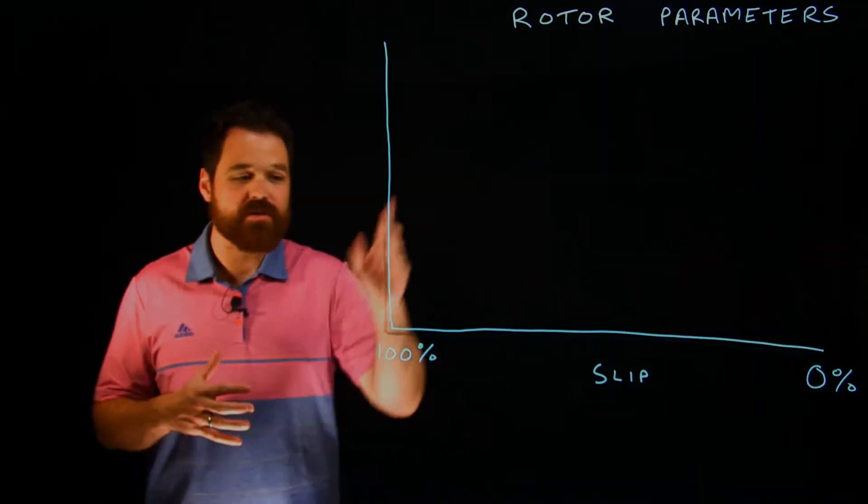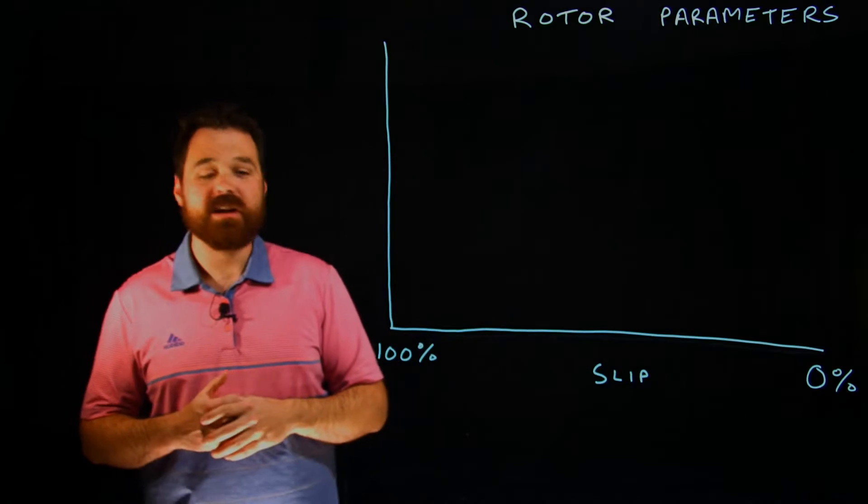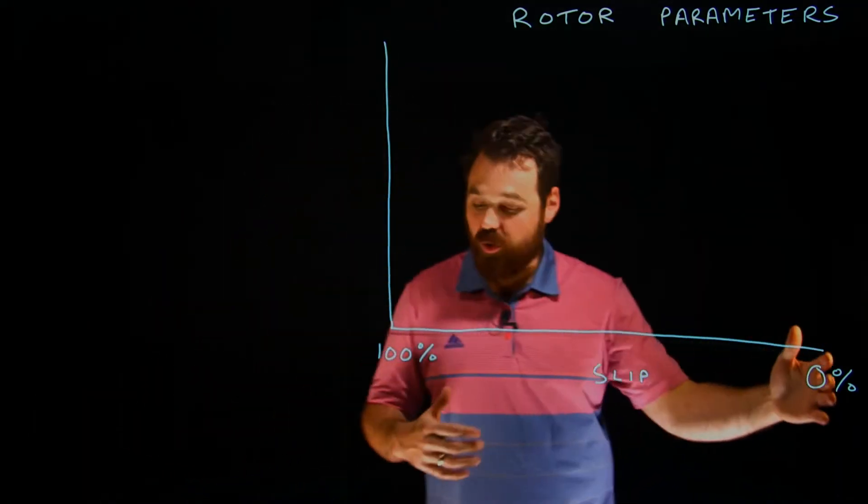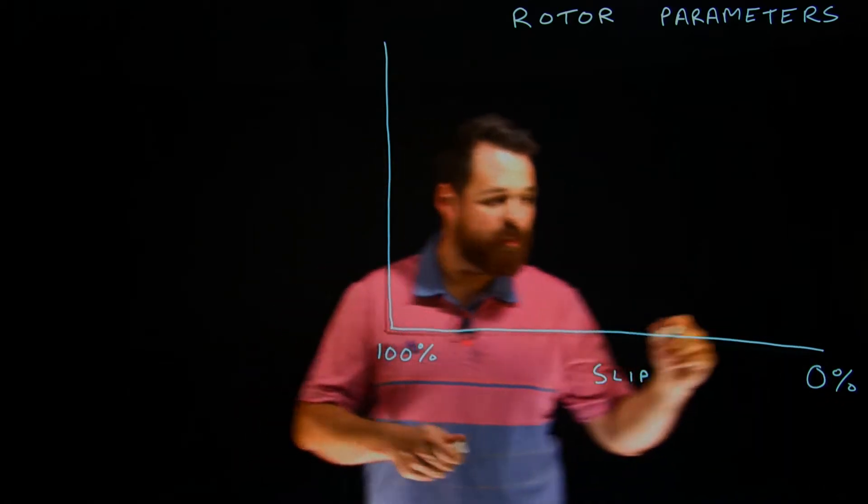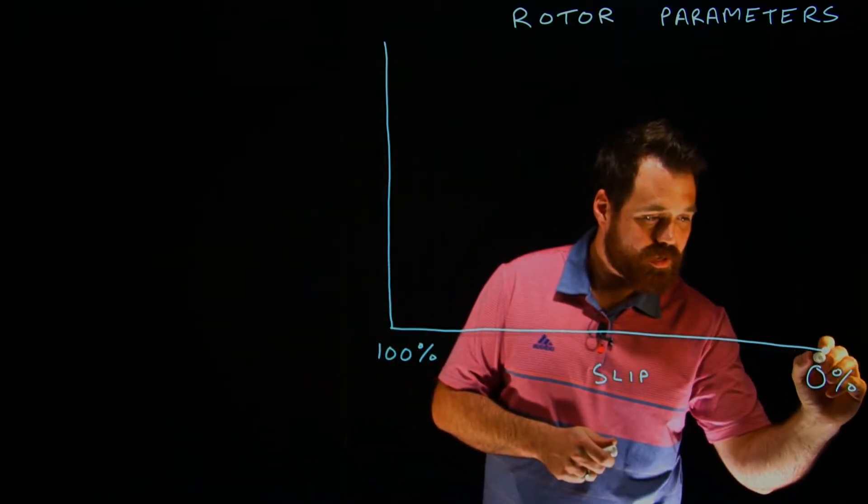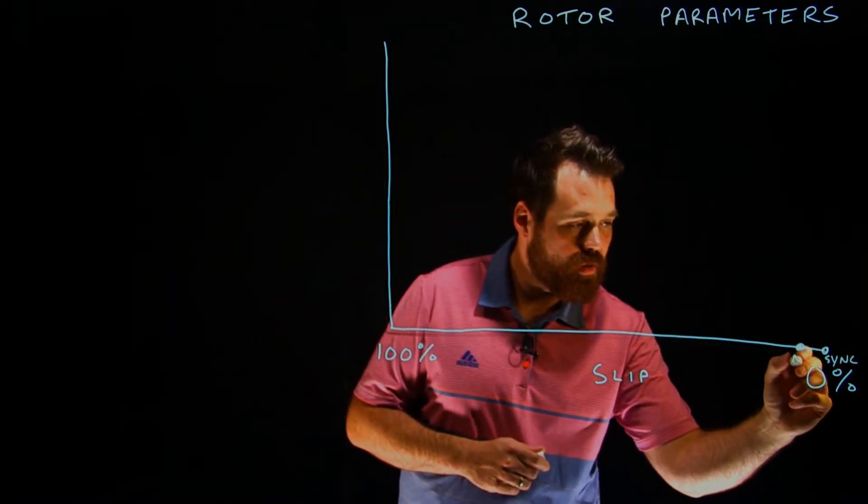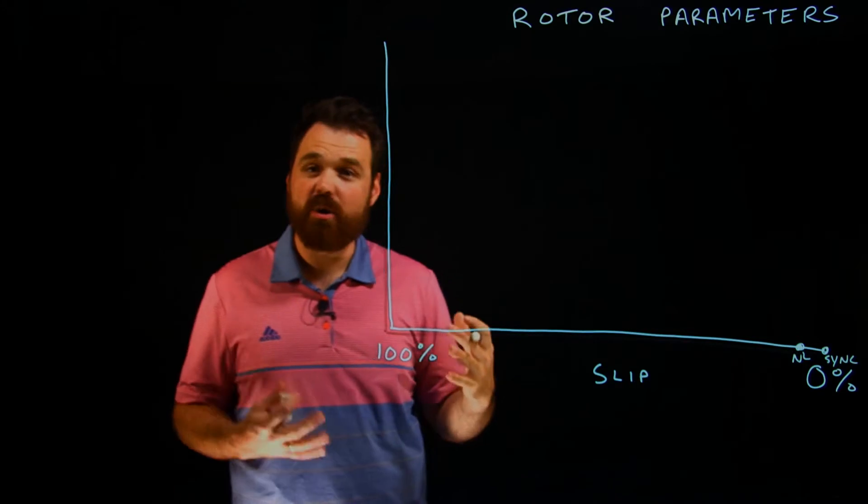So we're just going to draw this graph and talk about a couple different things. What this graph has is slip. So we're talking about our 0% slip would be basically our synchronous speed up there. And then we would have no load speed really close, like two to five RPM away from sync.